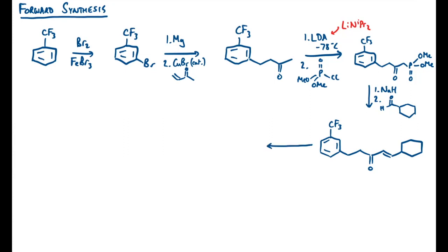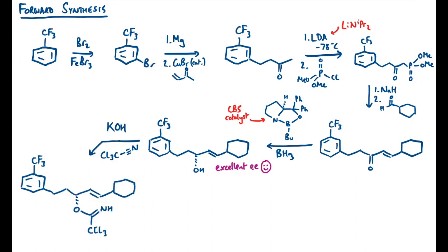Next I'm going to use a CBS catalyst to do an asymmetric reduction, so that will be something like this one. That will give me this allylic alcohol in excellent EE. Next I need to make a nucleophile there, so I'm going to use potassium hydroxide to form an alkoxide, and then that alkoxide can find this trichloroacetonitrile and attack it as a nucleophile. That's going to give me this trichloroacetimidate.